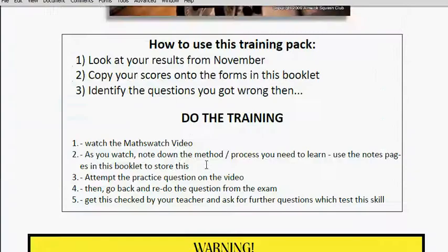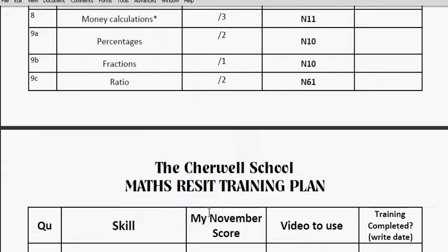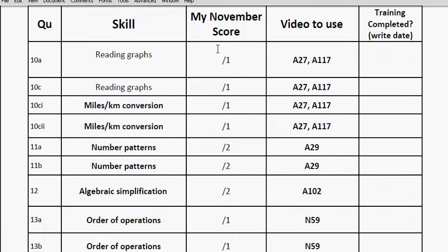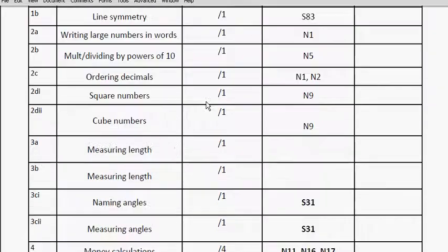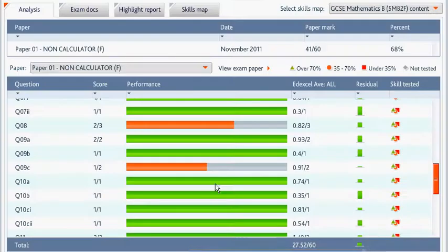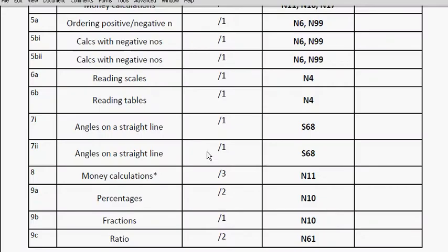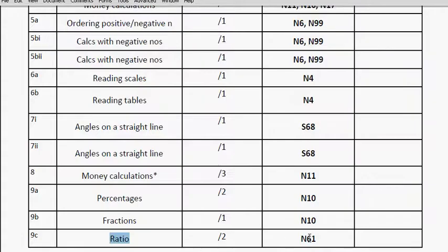The first thing we want you to do is write these scores in so you know exactly how you got on. There are two pages of this — the second page starts at question 10a. This will allow you to see what your weaker and stronger areas are. For example, this student will look at question 9c and find they got 1 out of 2 on ratio. So that's a problem — they need to work on that area.